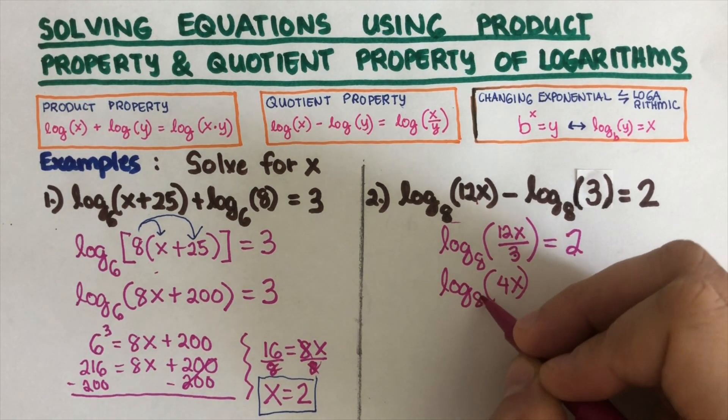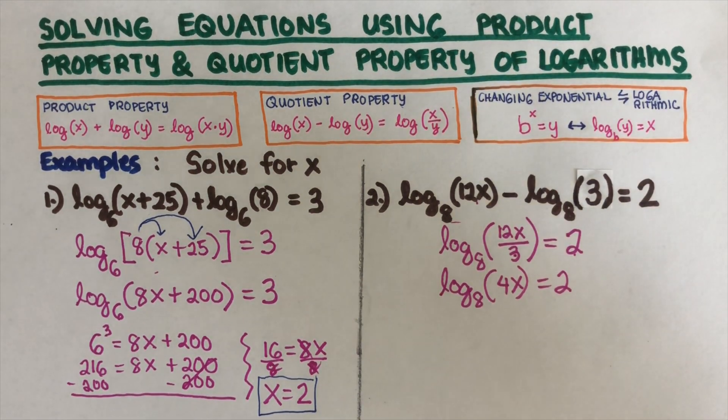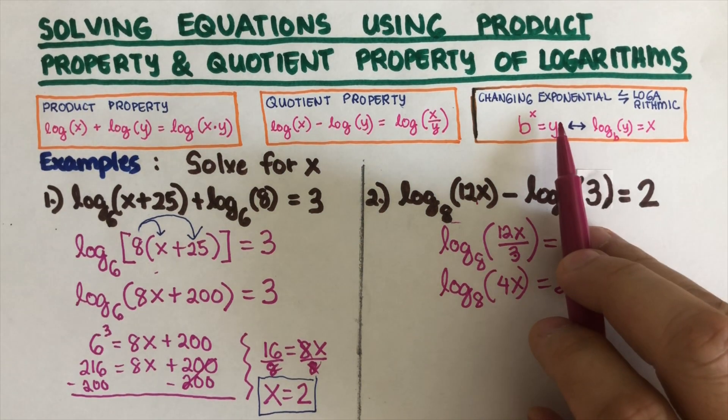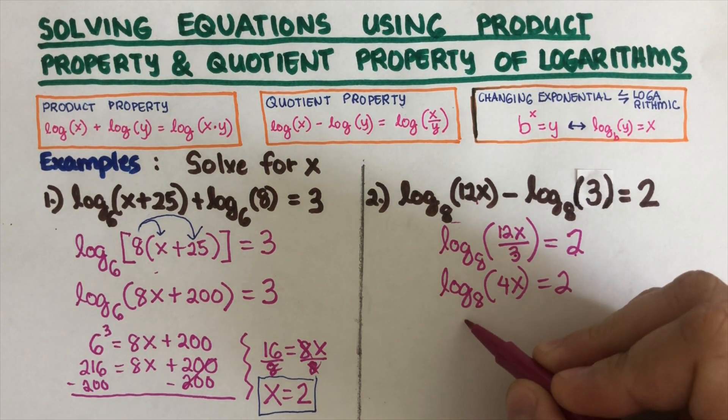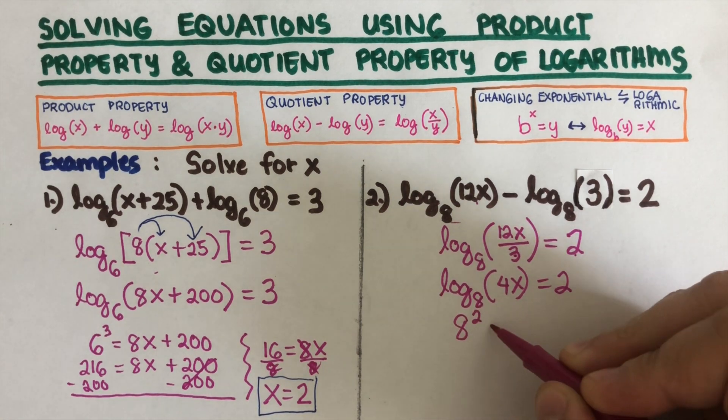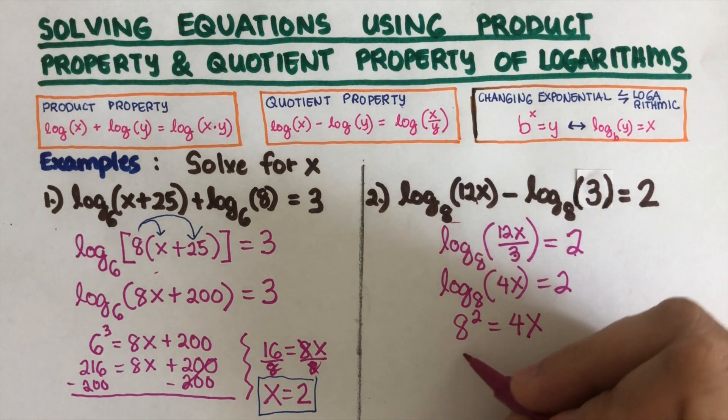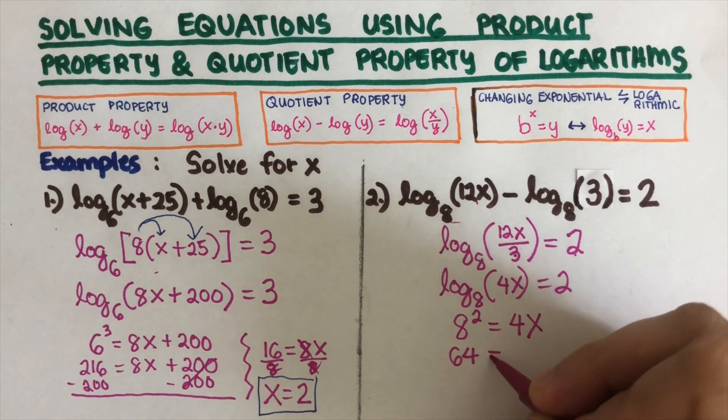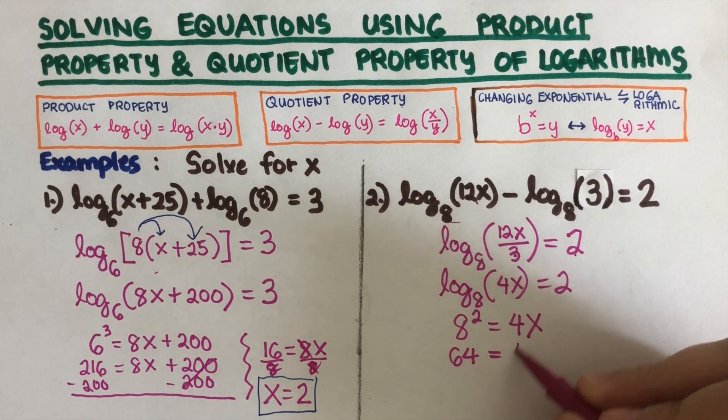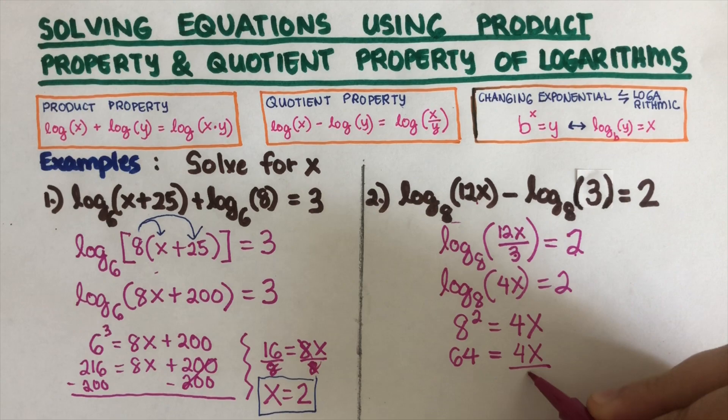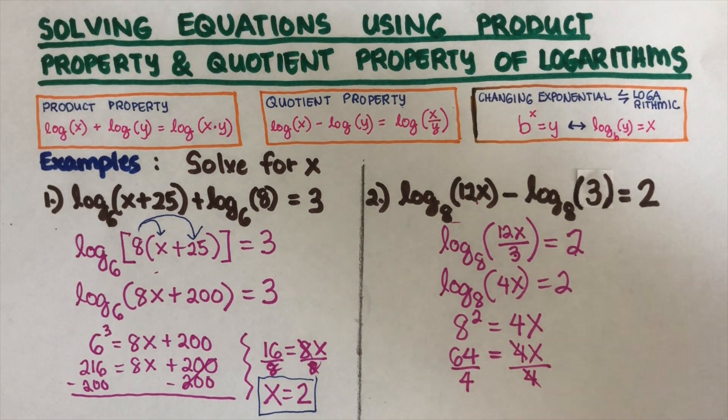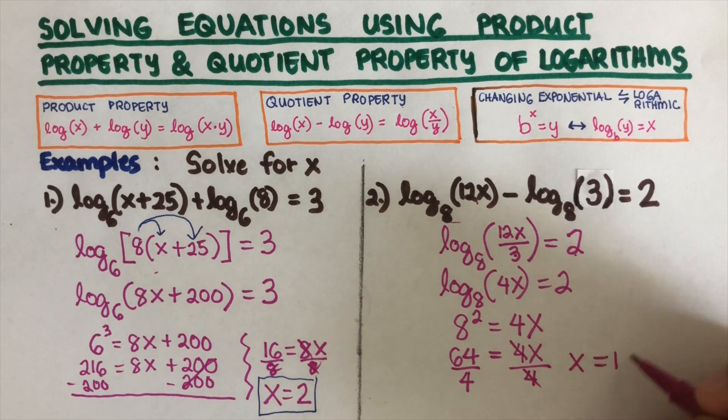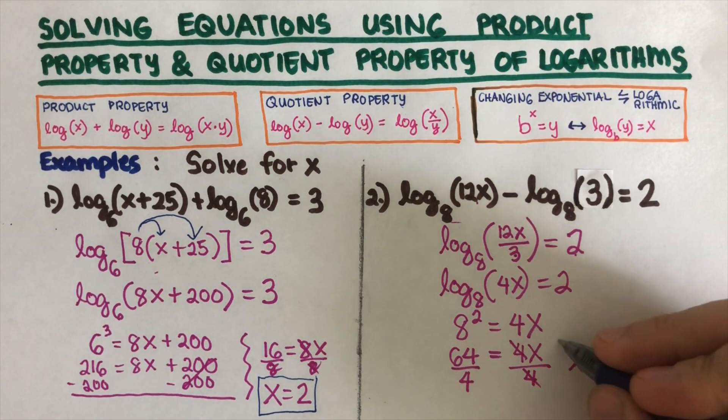I can go ahead and use this property to change this logarithmic form to exponential, and that would be 8 squared is equal to 4x. 8 squared is 64 is equal to 4x. Divide both sides by 4, so then our x is 16.